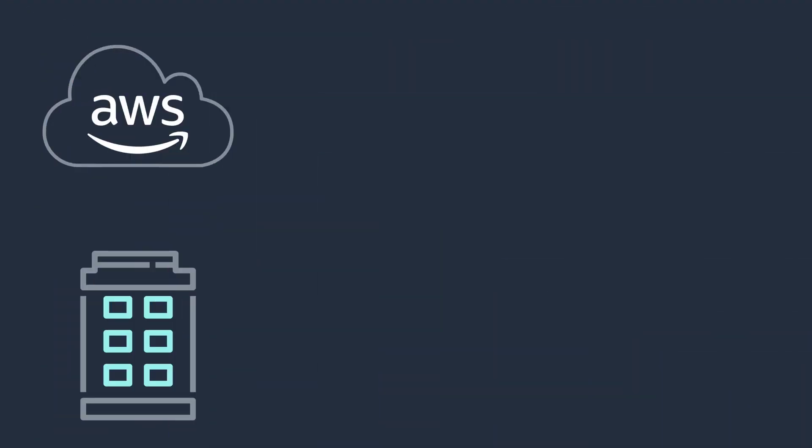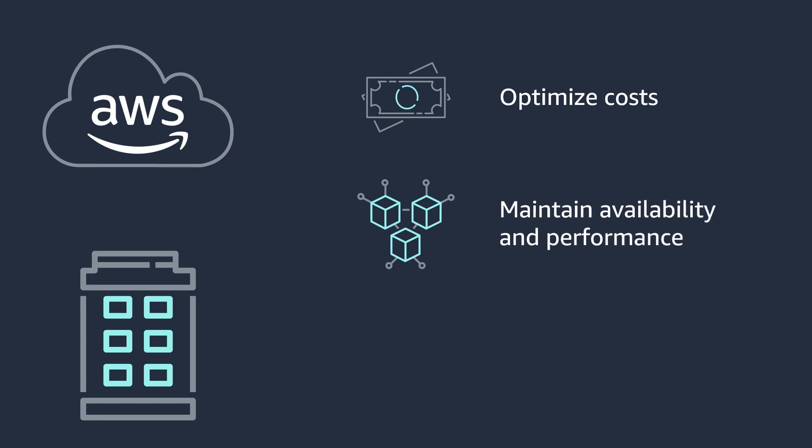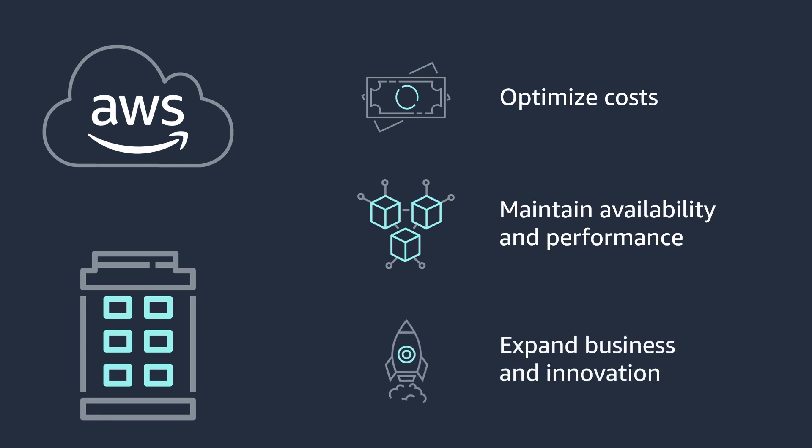As the leader of a growing business, you want your infrastructure to be infinitely scalable and available coast to coast. You want to make sure it delivers the best performance at the lowest price point. That's why the AWS Cloud is designed to help you optimize costs, but not compromise on availability and performance. This means you can focus less on operating expenses and more on expanding your business and innovating for customers.